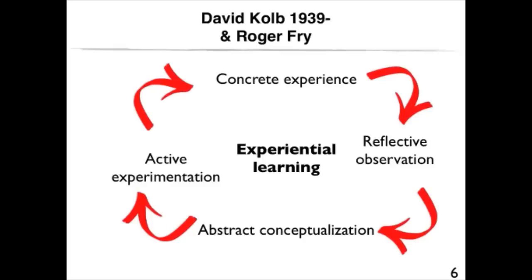Kolb and Fry argue that learning can start at any point in the model, which is often why we refer to it as the experiential learning circle. For example, in the case of Sam, learning starts with an experience about working in a group. In the traditional view of learning, learning stops when a group hands in their assignment. However, in this model, this can be just a starting point. Learning continues when Sam starts to reflect on the experience he had — what worked and what didn't, what he liked about others and what he didn't, and how he was perceived by others. Then Sam needs to form abstract concepts about how to handle group work the next time. He can also think about how he can reinvest the disciplinary content he learned through group work, and the cycle continues when Sam starts to experiment again.